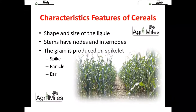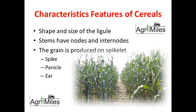Other features include that cereals have variable sizes and shapes of the ligule. Ligules are appendages present in cereals of the Gramineae family at the junction of the leaf sheath and leaf blade. The stem of the cereals is comprised of nodes and internodes, which is a characteristic feature of cereals. The grain in cereals is produced in specialized structures.